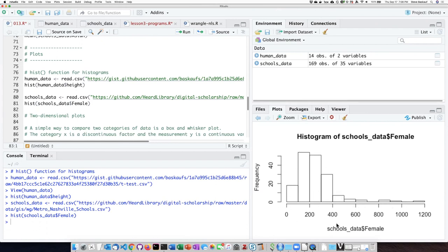So what the data shows you is the distribution of schools by number of female students. There are a small number of schools that have a lot of female students and a small number that have a few, but most schools have between about 100 and 300 females within the school.